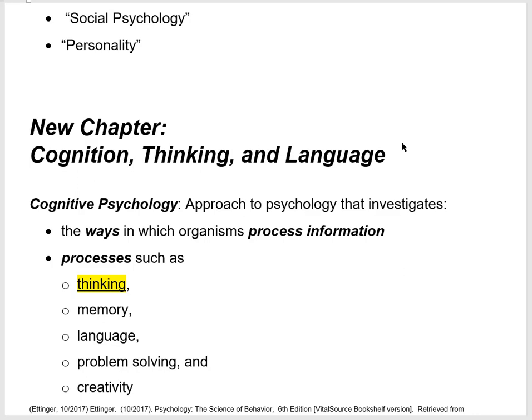Specifically, this chapter deals with the subject of cognitive psychology. Ettinger defines it this way: cognitive psychology is the approach to psychology that investigates the ways in which organisms process information, focusing on processes such as thinking, memory, language, problem solving, and creativity. That brings us to the first fill-in-the-blank — you should fill in the word 'thinking.'